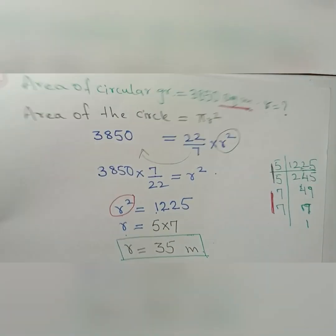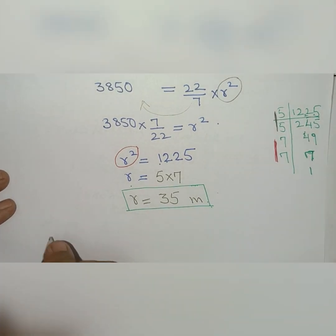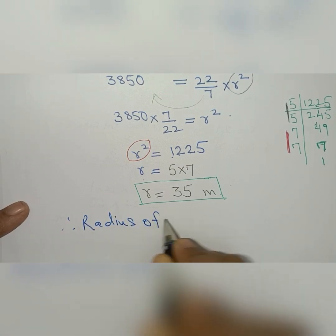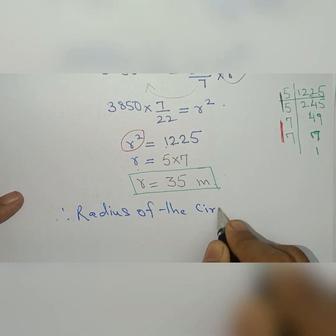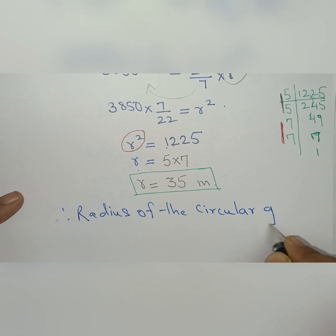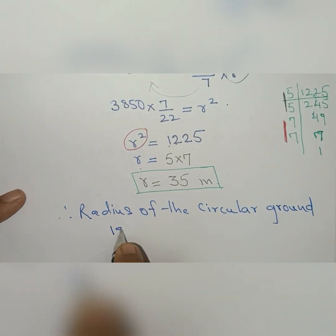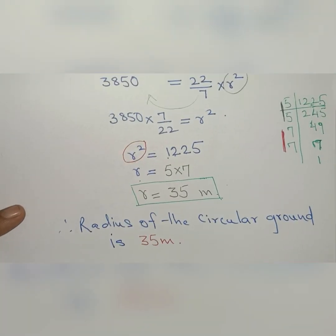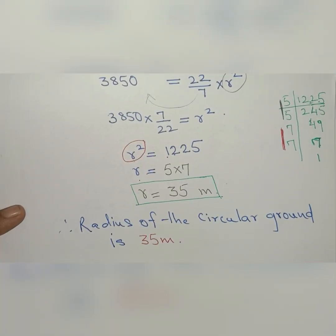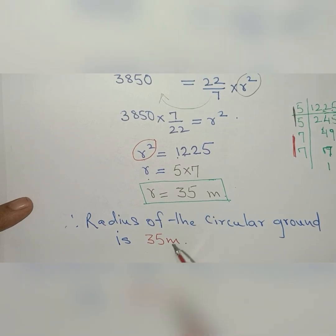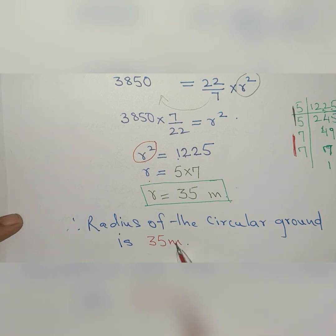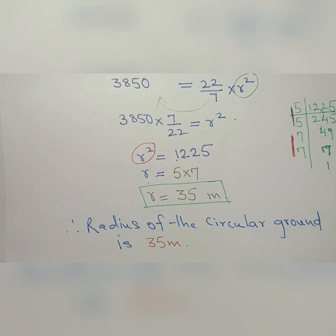Since it is a worded problem, we write the answer in sentence form: therefore, the radius of the circular ground is 35 meters. It was simple! Both solved examples are now complete.